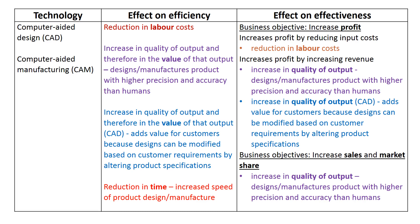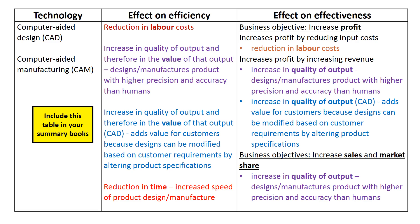Our second learning intention requires you to propose and justify technology strategies as ways of improving efficiency and effectiveness. To do this, you must be able to specifically relate the use of CAD and CAM separately to efficiency and effectiveness. That is the purpose of this table. Please include this table in your summary books, together with notes from the discussion which follows where this helps you to better understand the table.